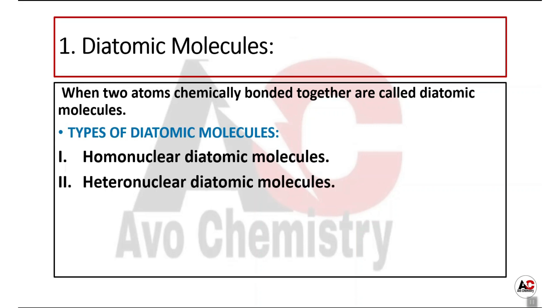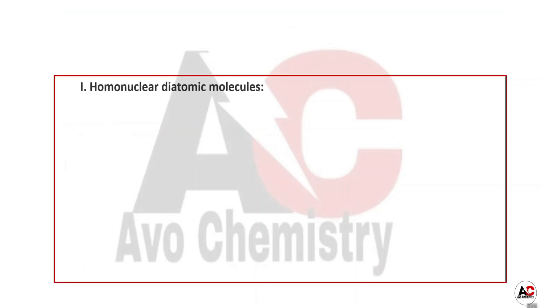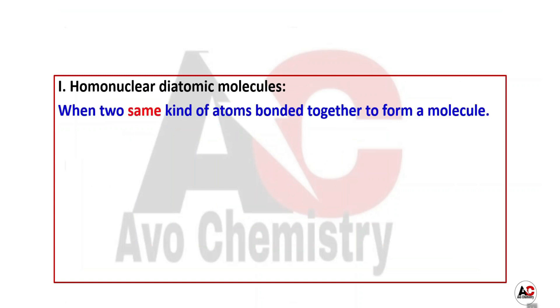Homo means same and hetero means different. Homonuclear diatomic molecules are molecules where the two atoms are identical, like O2, N2, F2, I2 - in these molecules both atoms are identical.